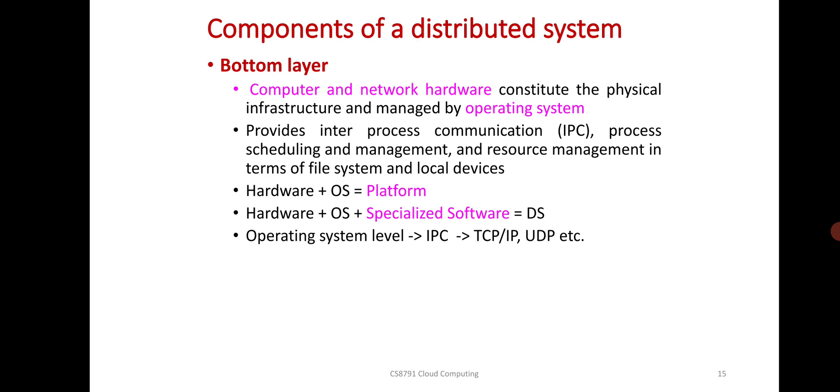The bottom layer of distributed system consists of computer and networked hardware. It constitutes the physical infrastructure managed by the operating system, which provides inter-process communication (IPC), process scheduling and management, and resource management in terms of file systems and local devices. Hardware plus operating system equals platform.